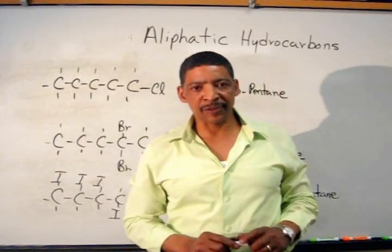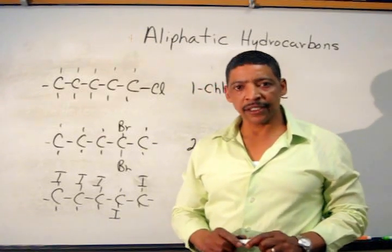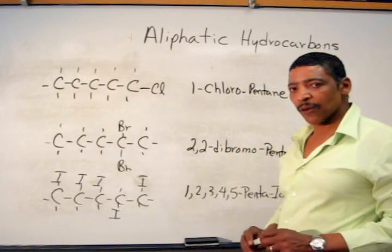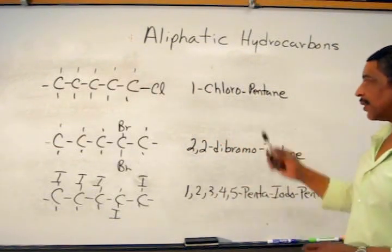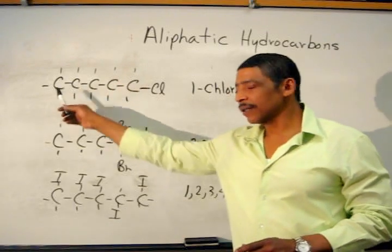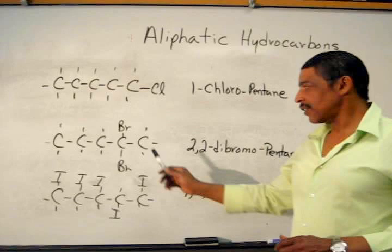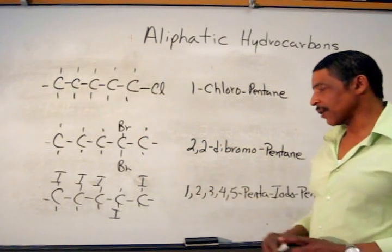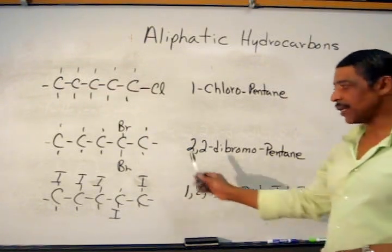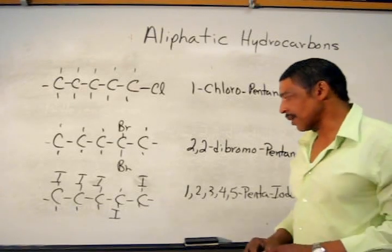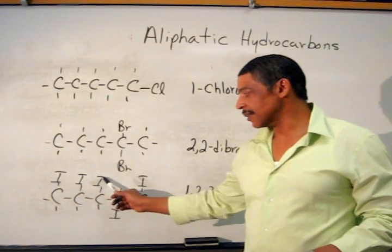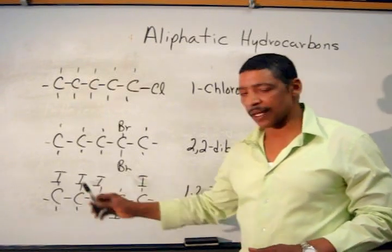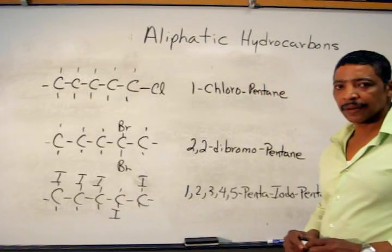When carbon chains contain substituent groups such as a halogen, the location of the halogen must be indicated. For example, this compound has a chlorine connected to carbon 1, therefore this compound is called 1-chloropentane, since the carbon chain contains 5 carbon atoms. This compound also contains 5 carbon atoms, but 2 bromines are connected to the same carbon. This compound is called 2,2-dibromopentane. In the last example, an iodine is connected to each carbon atom. This compound would be called 1,2,3,4,5-penta-iodo-pentane.